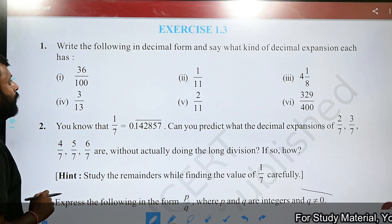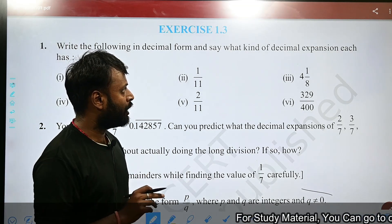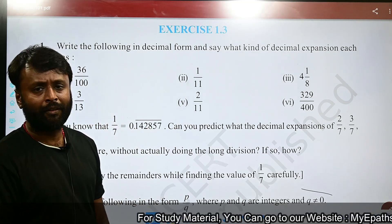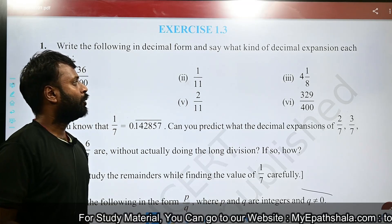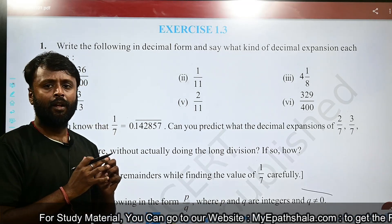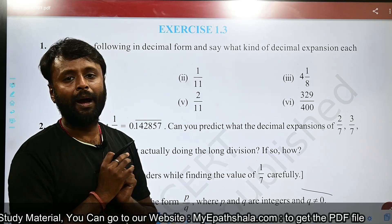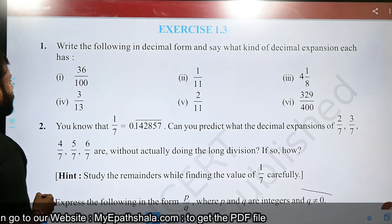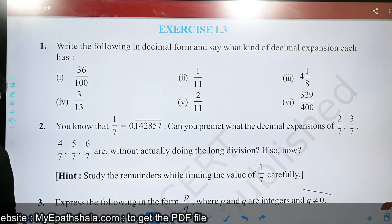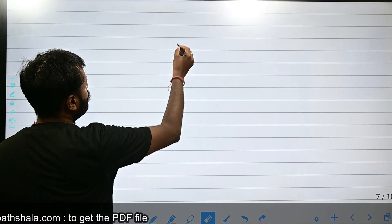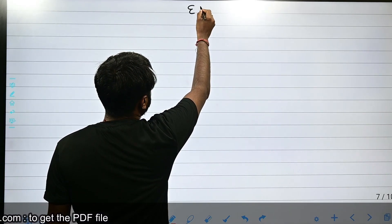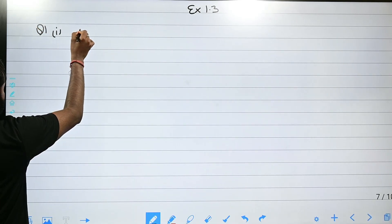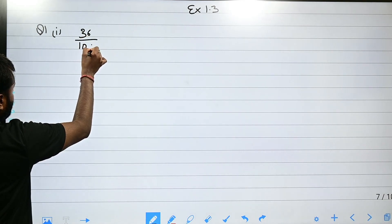It is written: write the following in decimal form and say what kind of decimal expansion each has. We have given fractions and mixed fractions, and we have to convert them all in decimal form. The division method will be used. The first question is 36 upon 100.